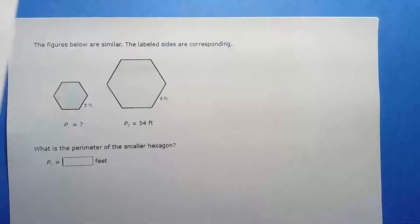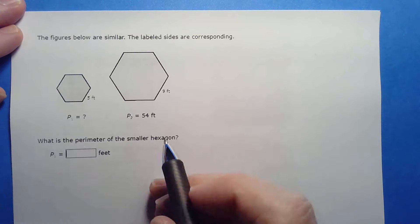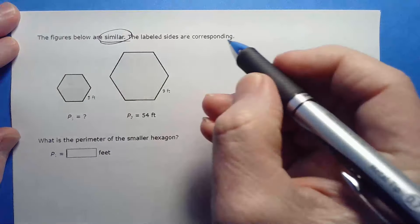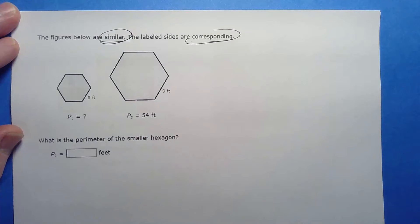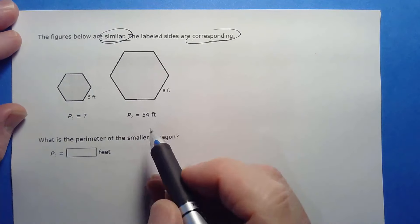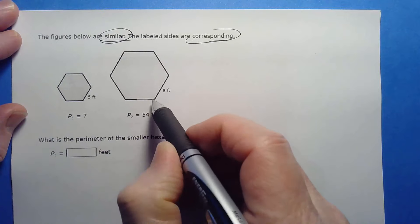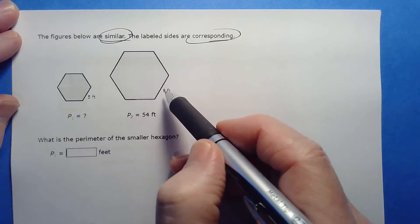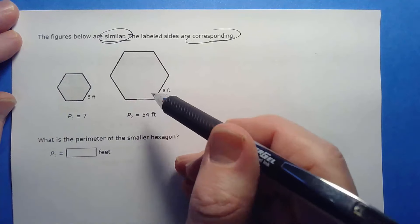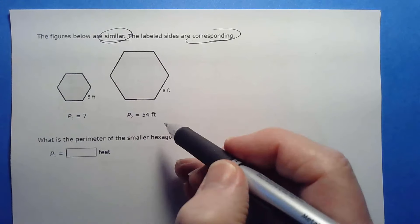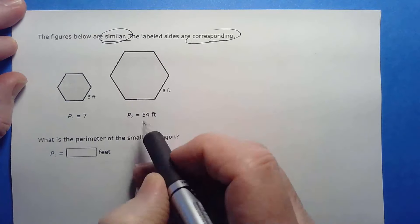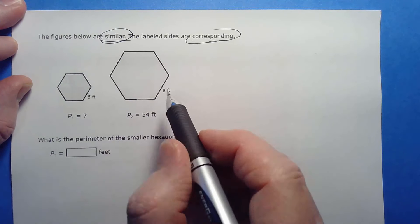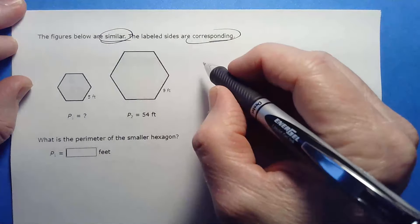Now we've got a hexagon. Again, importantly, they are similar and the labeled sides are corresponding — make sure you've satisfied that condition. The perimeter of the large hexagon is 54 feet. Maybe it's a regular hexagon, maybe not — but it turns out we don't necessarily need to know that. It's a perimeter, so it's a length, and all we have to do is multiply by the ratio of the two corresponding lengths.